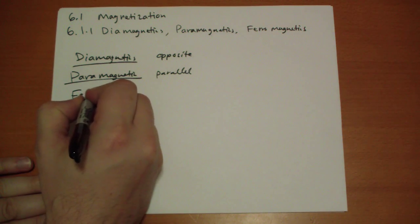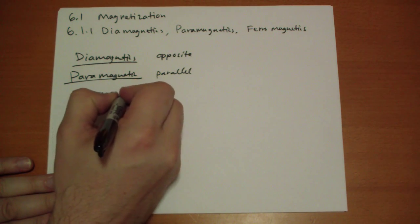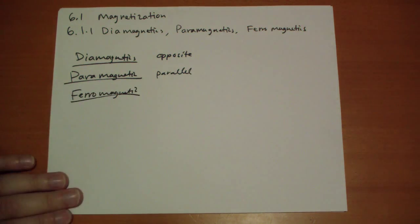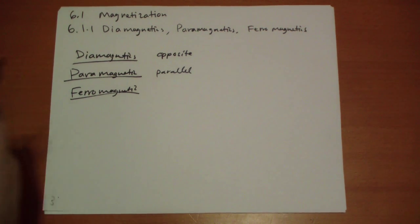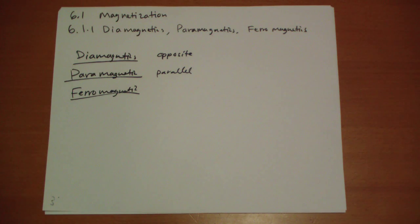Whereas ferromagnets, the ferro having to do with iron, iron's a very common material that you're probably familiar with. Not only can you give it a magnetic charge, so to speak, but it also behaves as a very powerful paramagnetic.